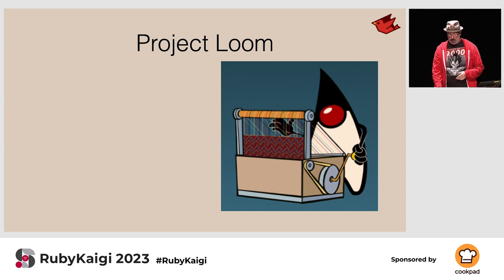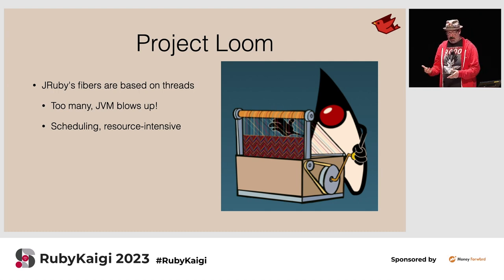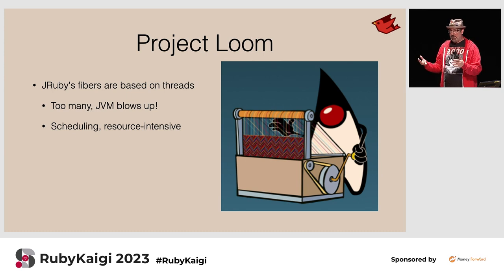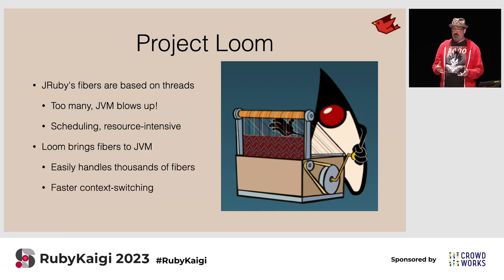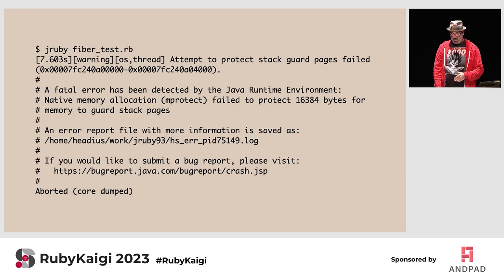One of the really exciting features coming in the JVM world is Project Loom. JRuby implements the Fiber class in Ruby, but since we have no way to control the call stack on the JVM, we've had to simulate fibers using a native thread. This doesn't work if we're trying to spin up thousands or tens of thousands of fibers — most systems just won't let you launch that many threads. Project Loom brings real, native fibers to the JVM. Here's a benchmark: I create 100,000 fibers that all immediately yield, then resume and execute.